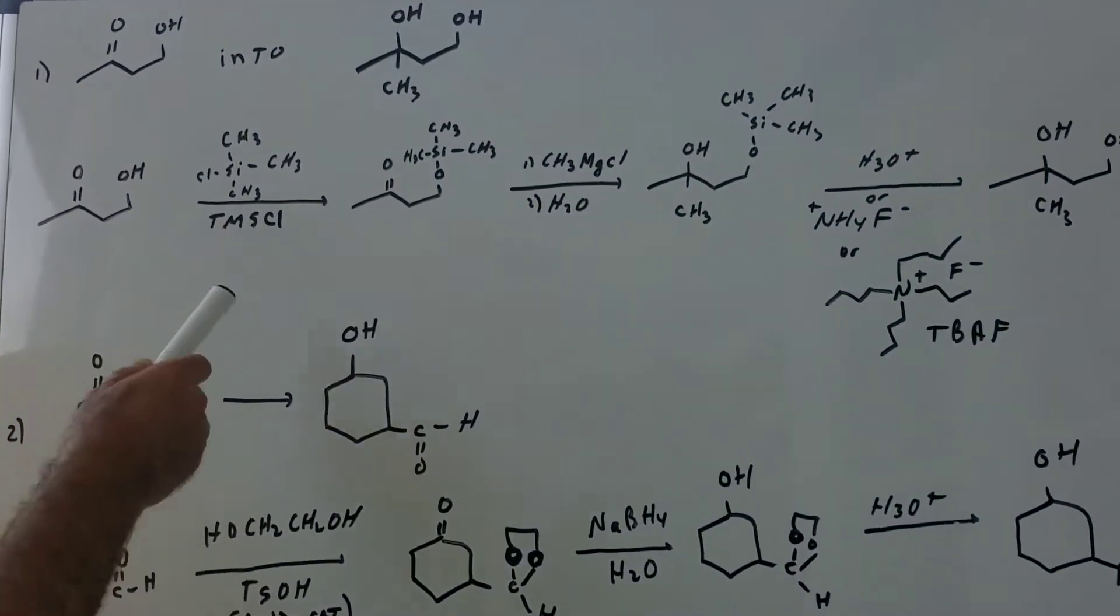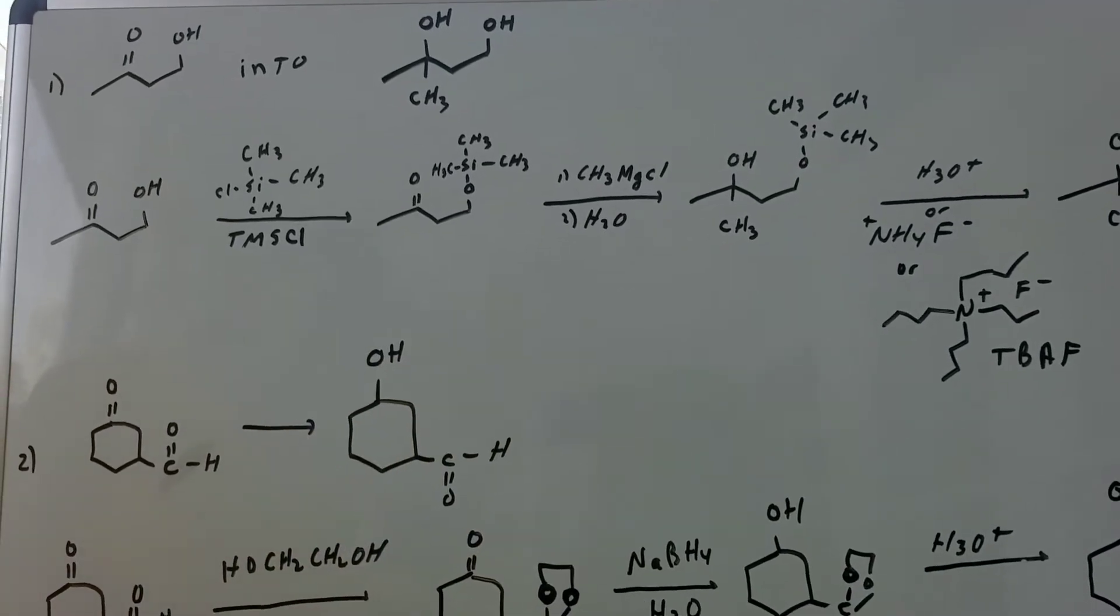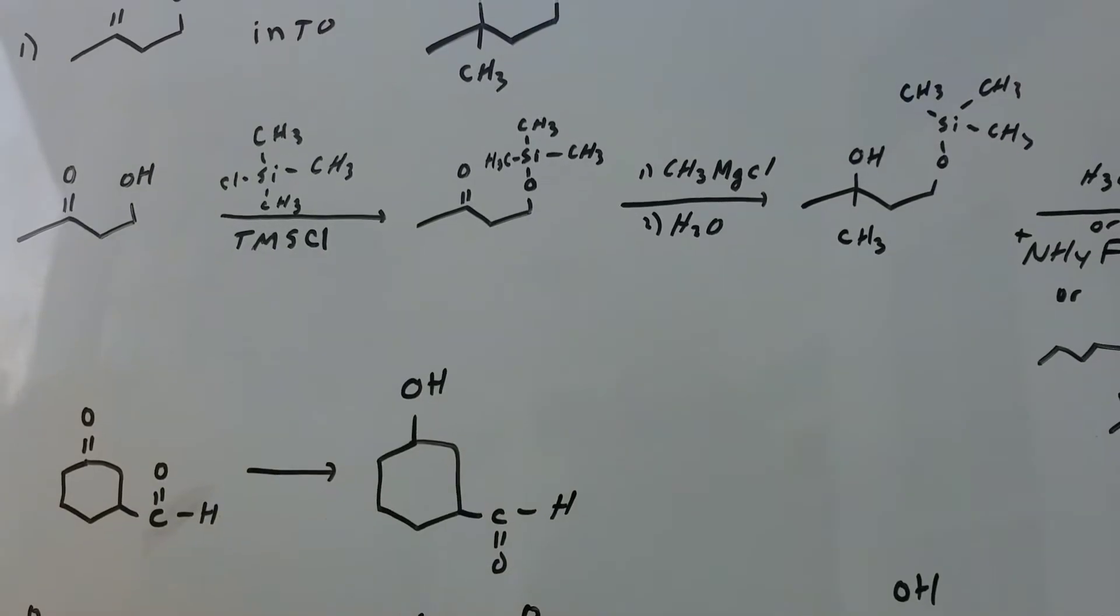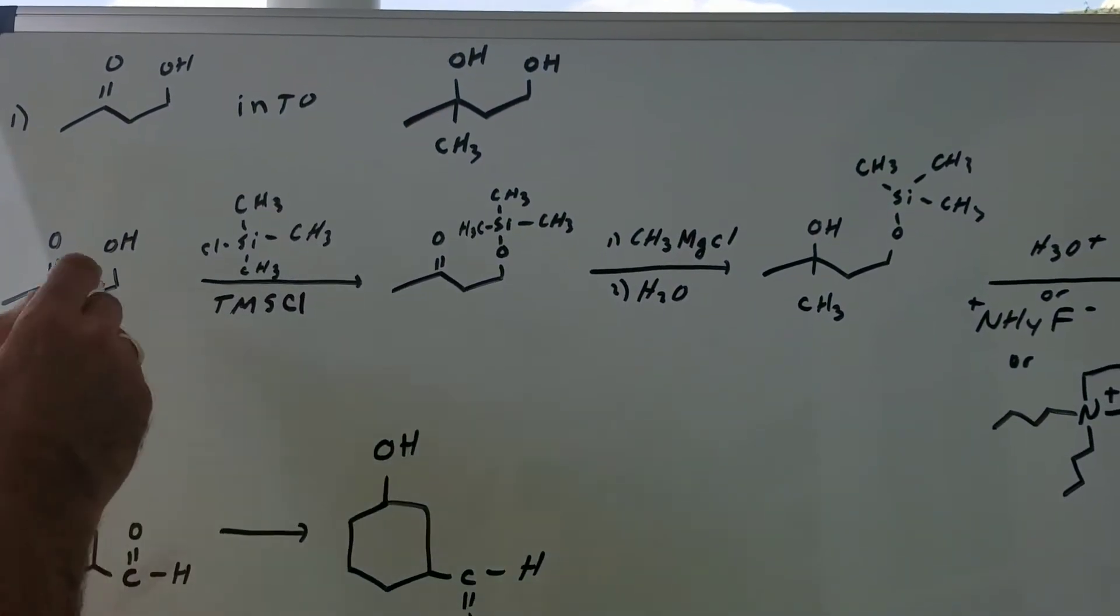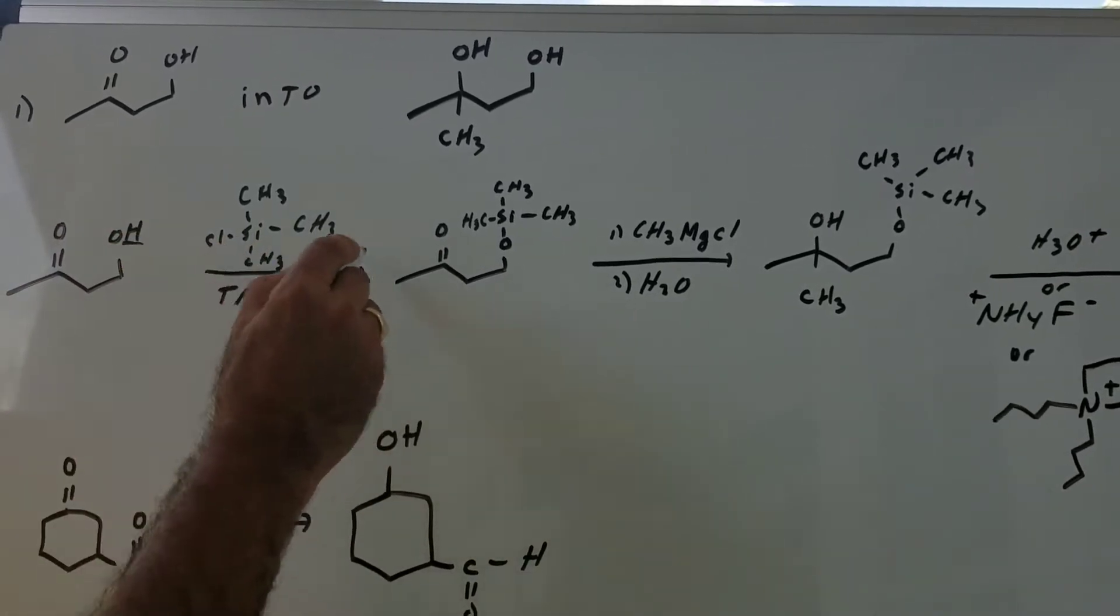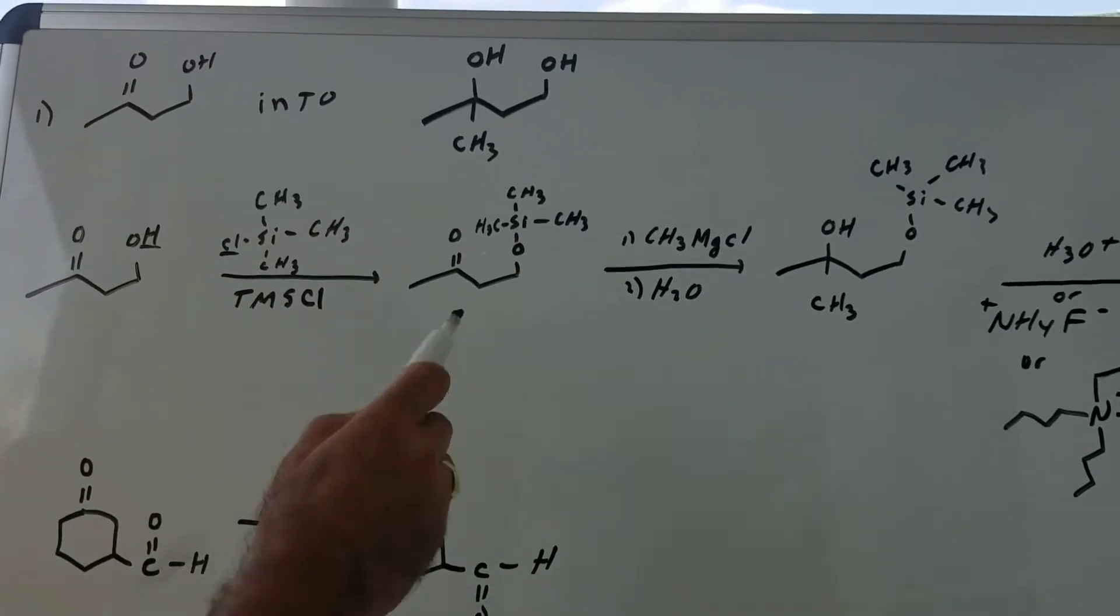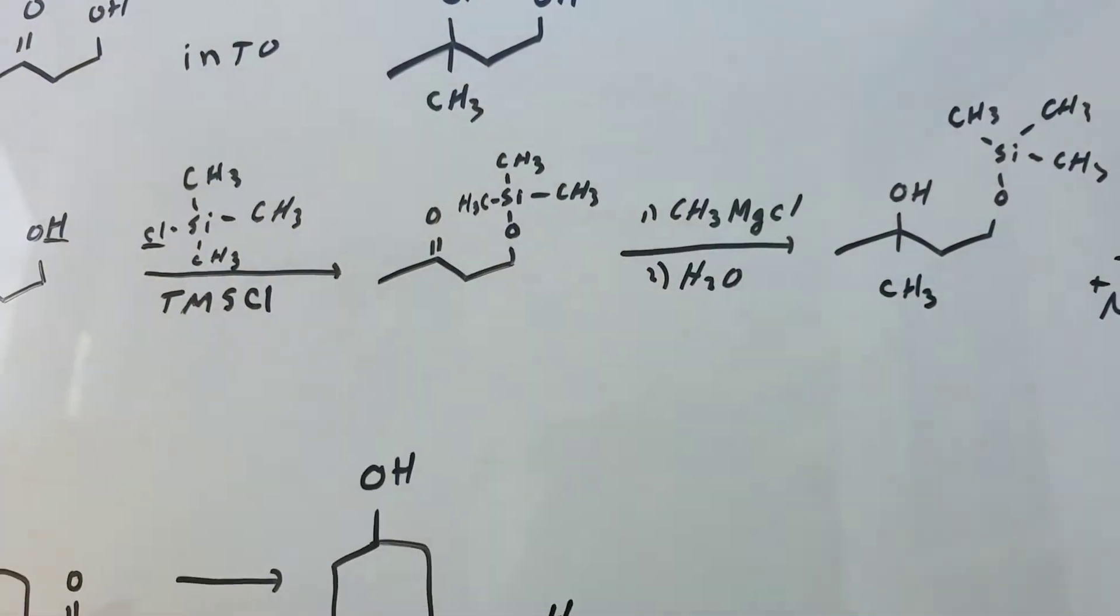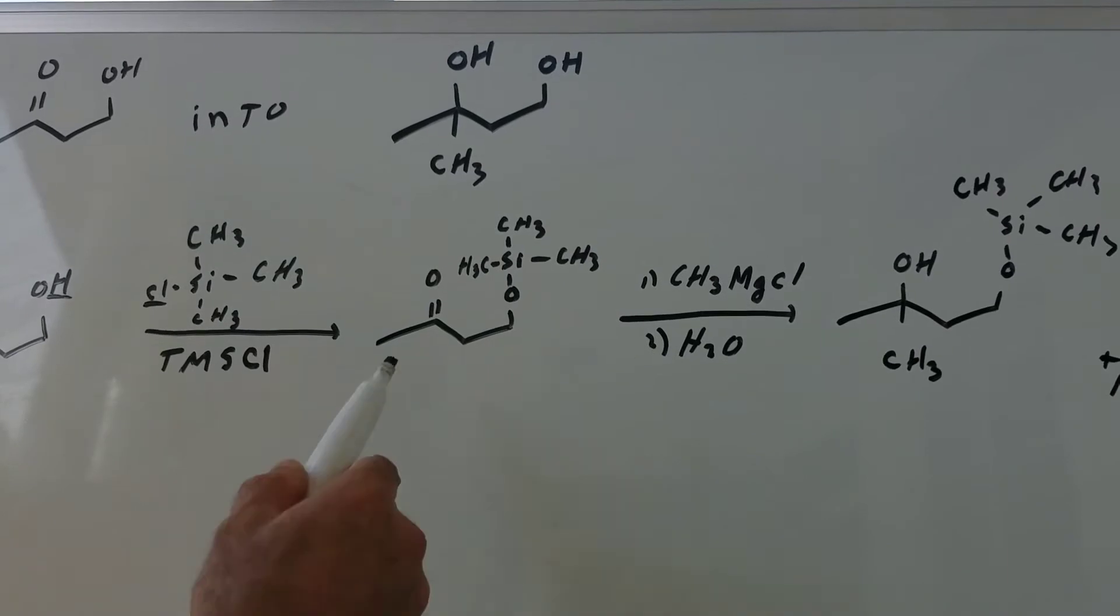If you look at what I first did is I protected the alcohol group using a chemical called trimethyl silylchloride. Sometimes in advanced organic chemistry, we just write TMSCL. It's a silicon with three methyls and a chlorine. And all it simply does is it removes the H and the Cl and it puts on the silicon moiety almost like a lock. Once we got this locked in place, the OH group is now protected.